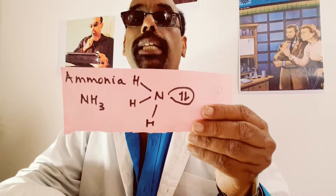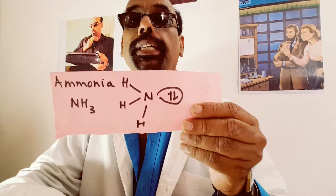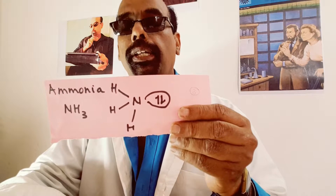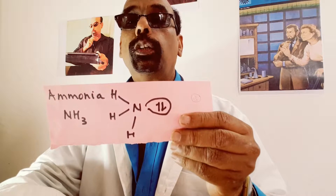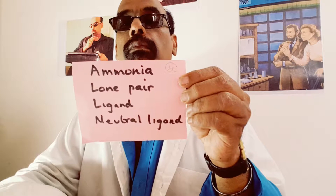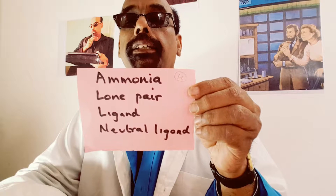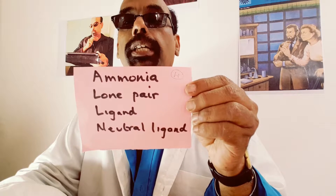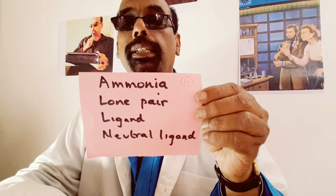Another molecule is ammonia, with formula NH₃. Three hydrogen atoms are covalently bonded to one nitrogen atom, and it possesses a lone pair of electrons. Because ammonia has a lone pair of electrons, it is said to be a ligand. Ammonia is neutral, so ammonia is a neutral ligand.